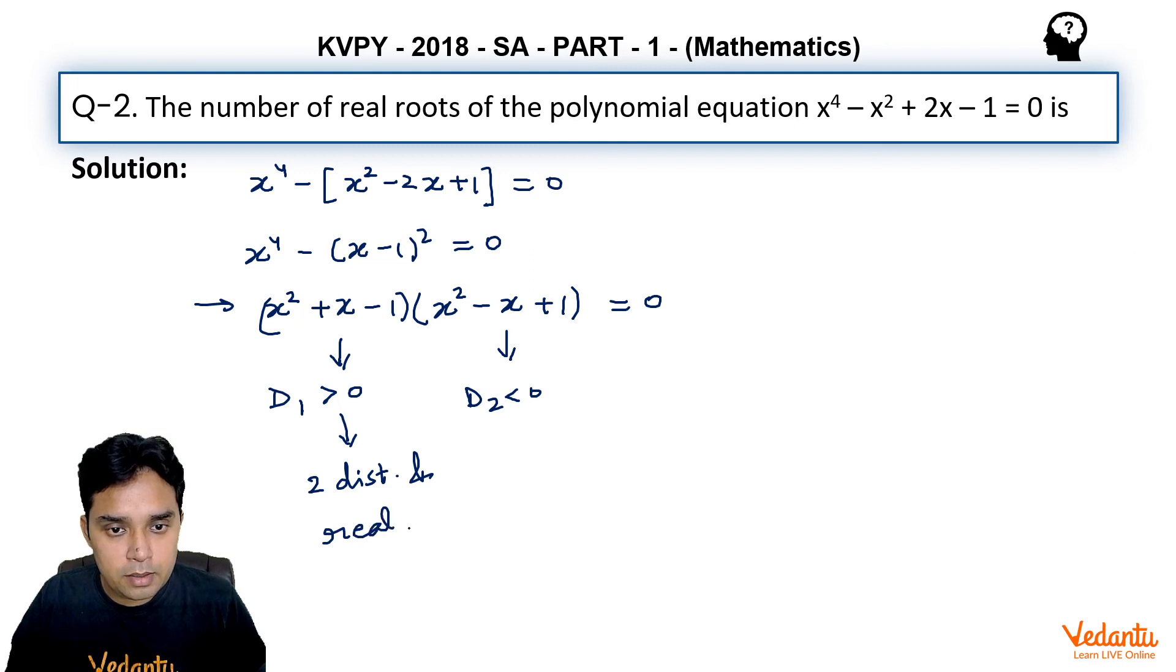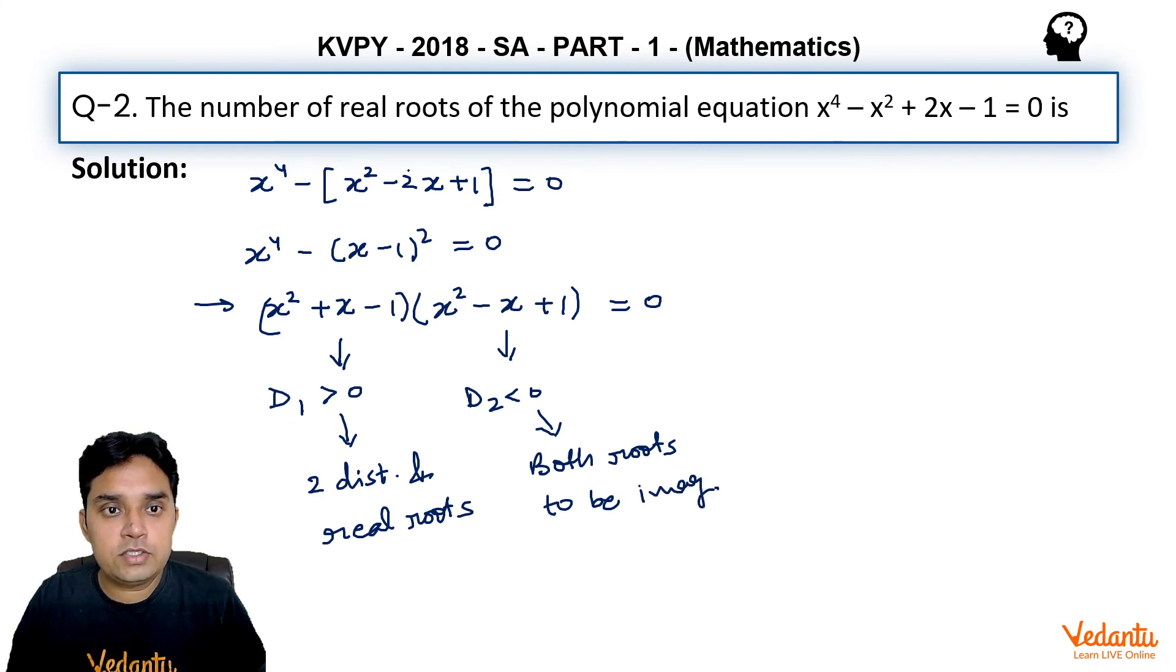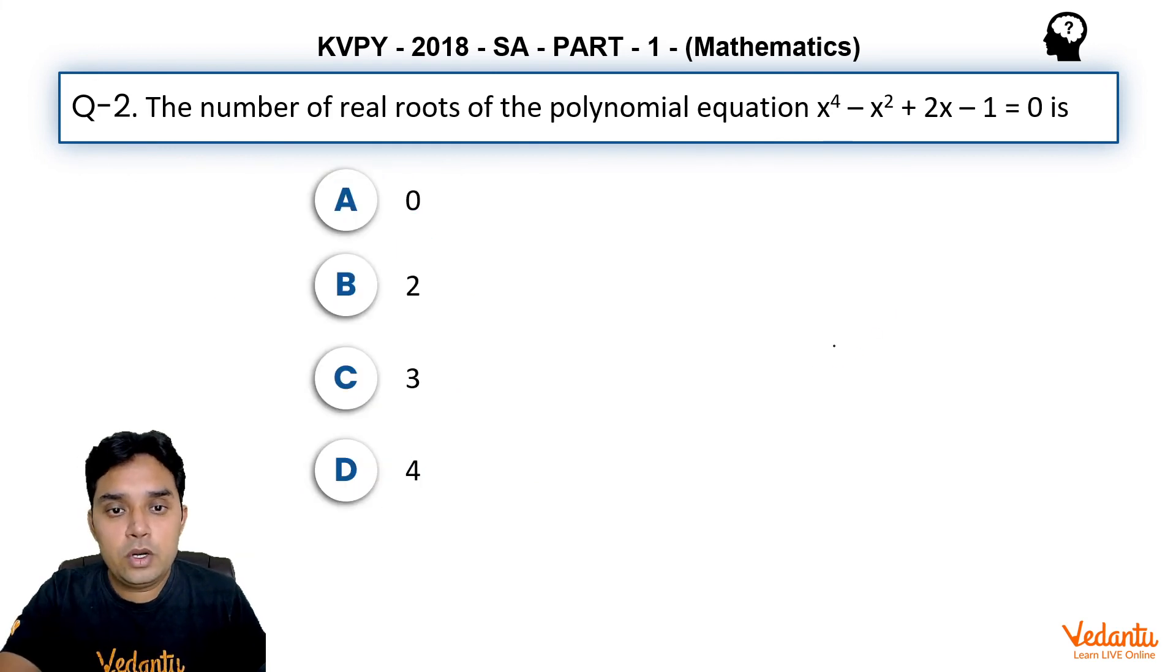But here we will have both roots to be imaginary, to be imaginary, and hence total number of real roots of this polynomial equation should be two, because only one bracket is giving me real roots. So answer should be two for this question, so answer is B.